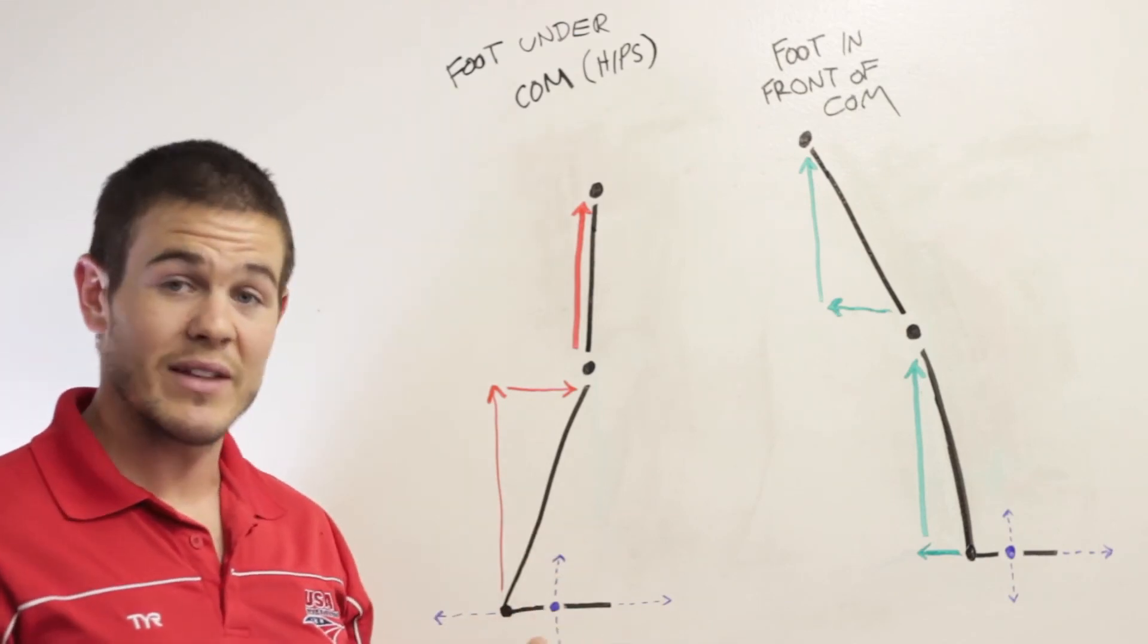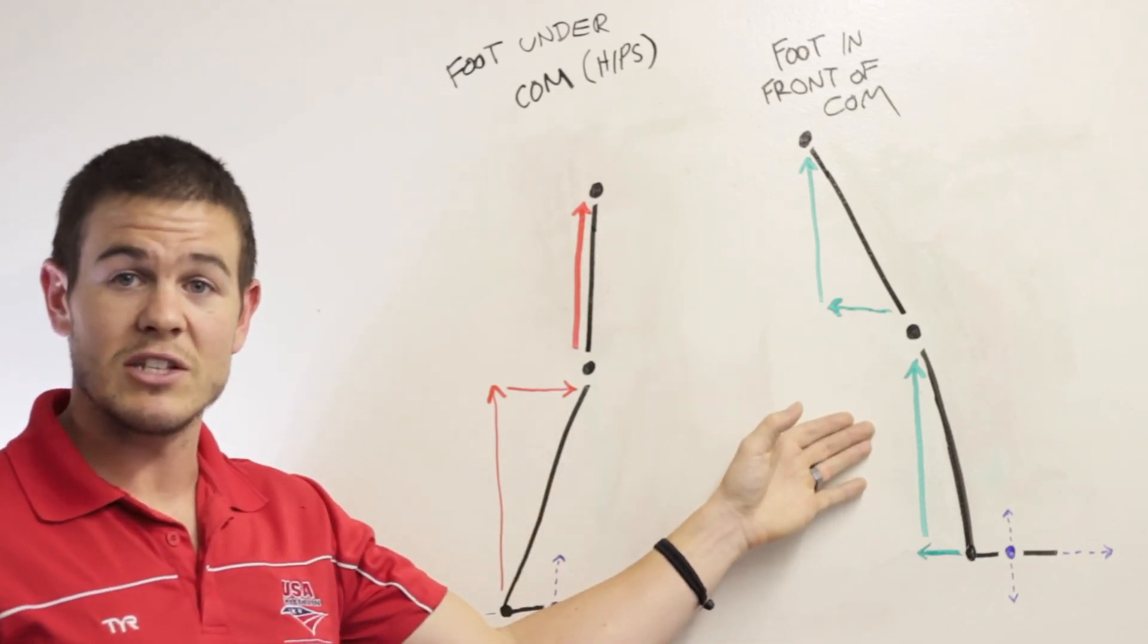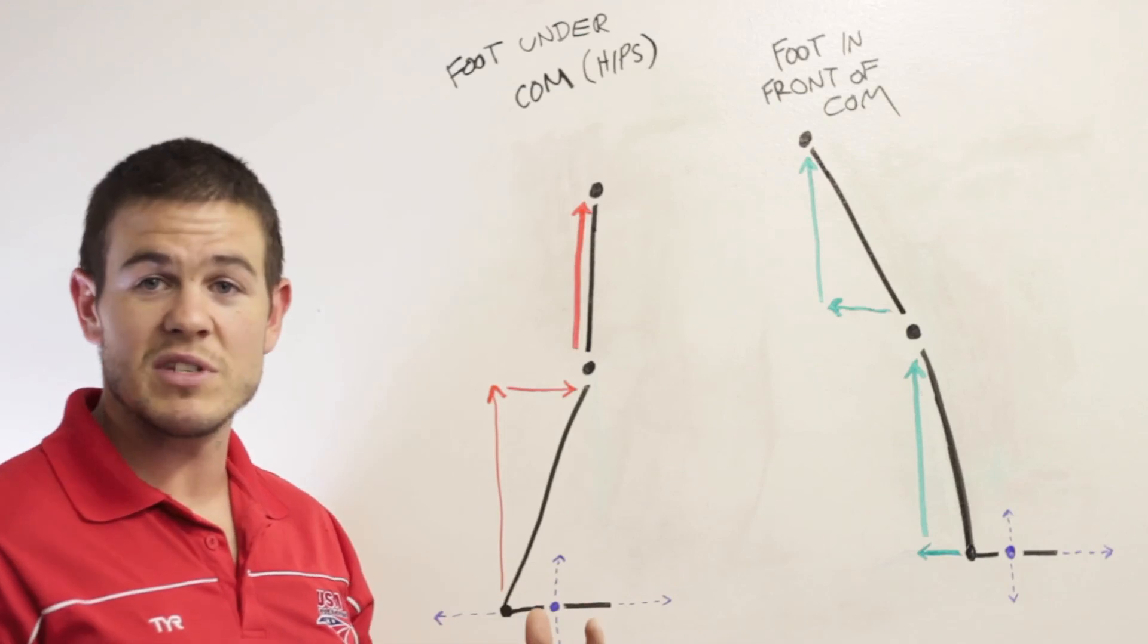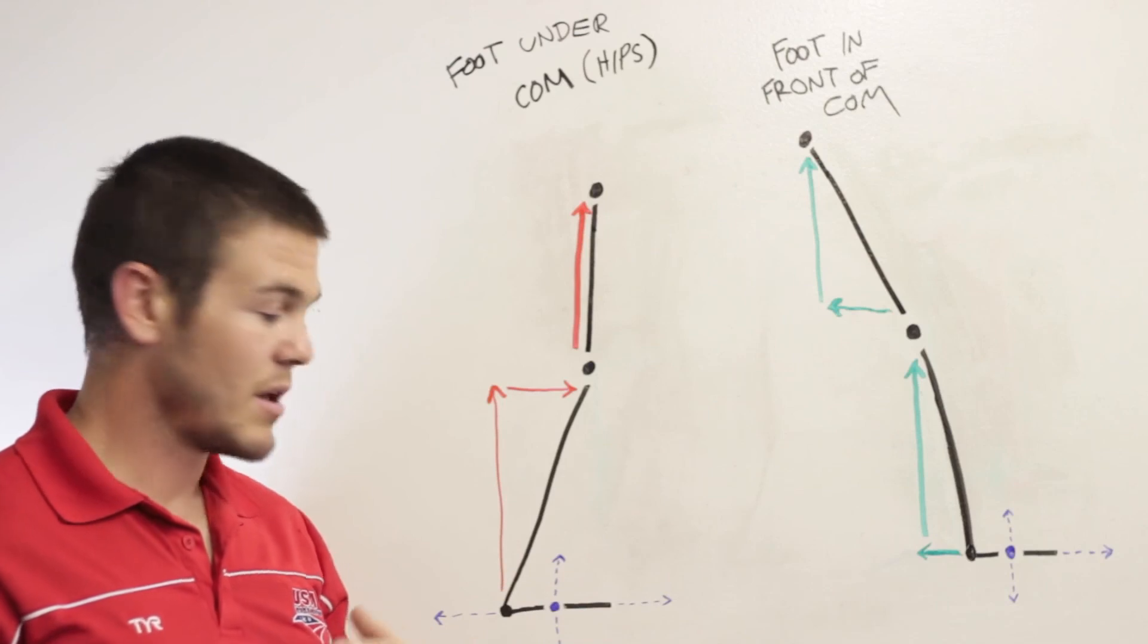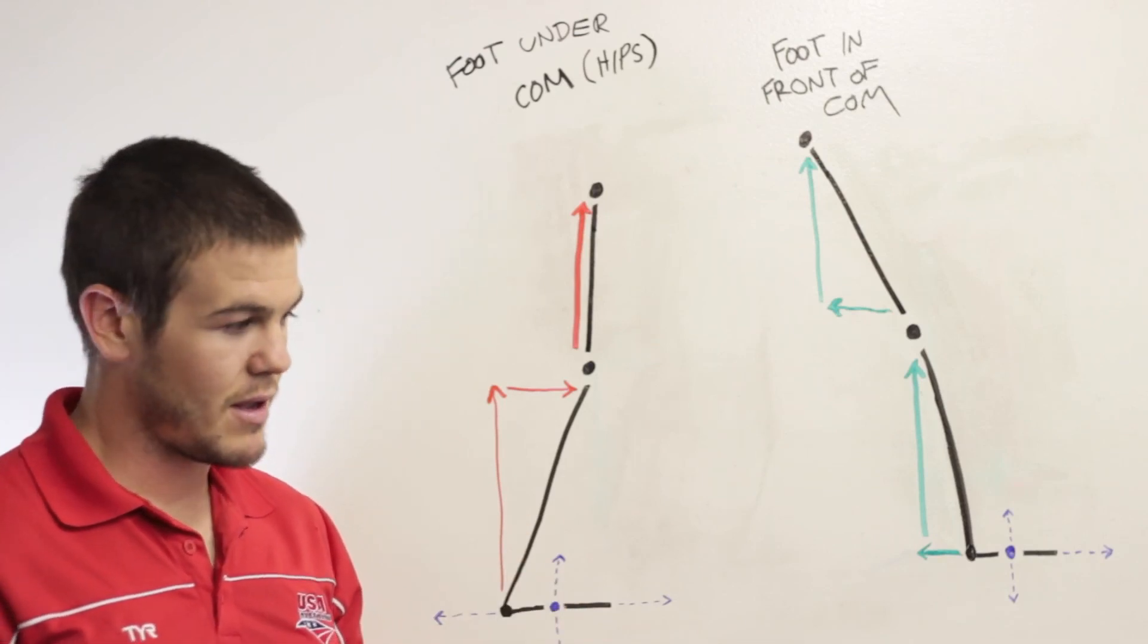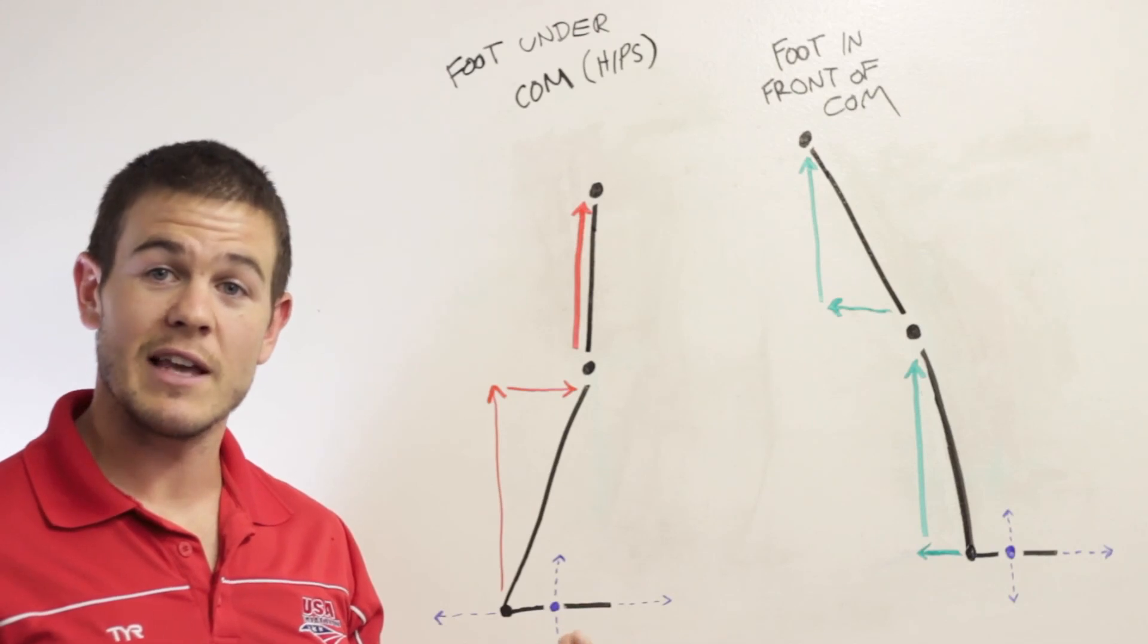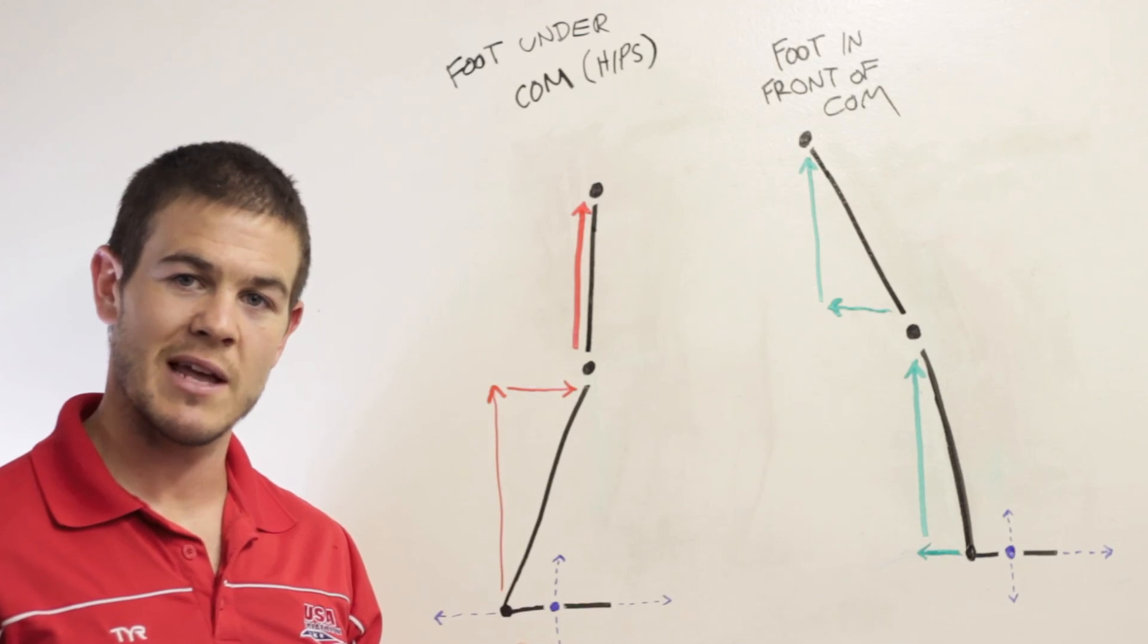So there you have it. Essentially, front side contact gets you momentum stealing, backwards forces, whereas that foot landing position underneath the hip helps you generate forward momentum every step. Hopefully that gave you a little insight and maybe whether you could or need to change your running mechanics.